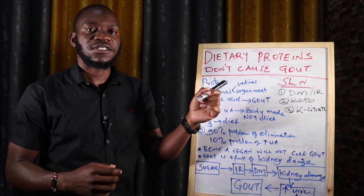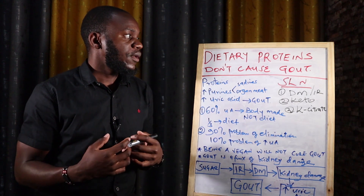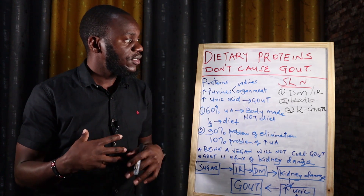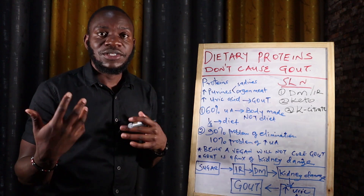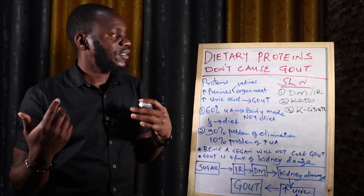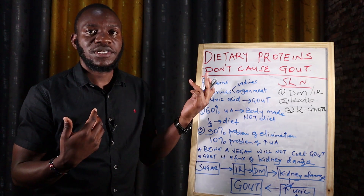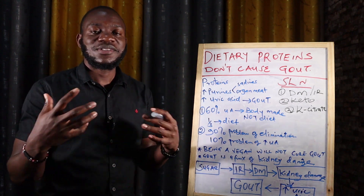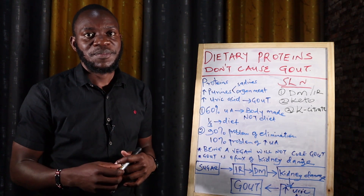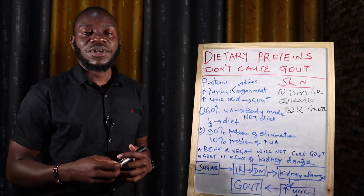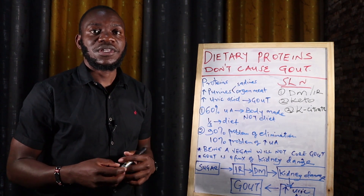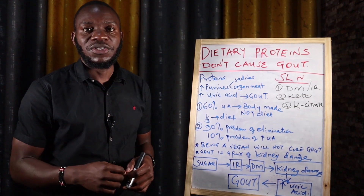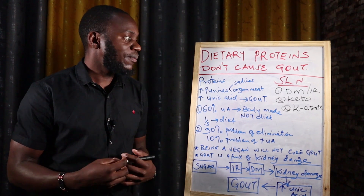Most people believe that high consumption of dietary protein leads to formation of uric acid, which then crystallizes and precipitates in your joints, causing pain and inflammation. That is a misconception we are about to change in this video, so welcome and let's get learning.